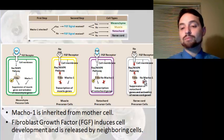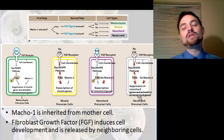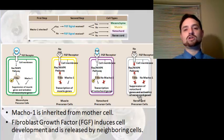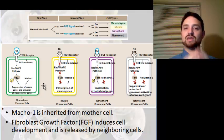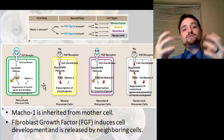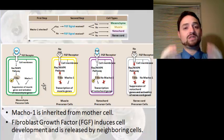When macho-1 is absent but FGF is present from surrounding cells, you get the precursor for notochord cells. When neither macho-1 nor FGF is present, you end up with a nerve cord precursor. During cleavage, some cells receive macho-1 and some do not, while FGF from surrounding cells induces groups of cells to produce a particular type of tissue as the organism develops.